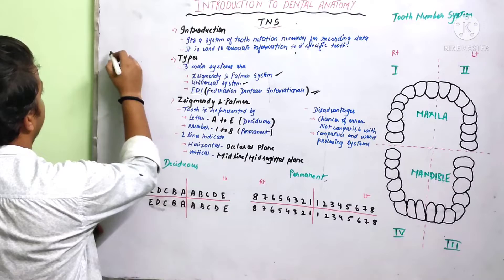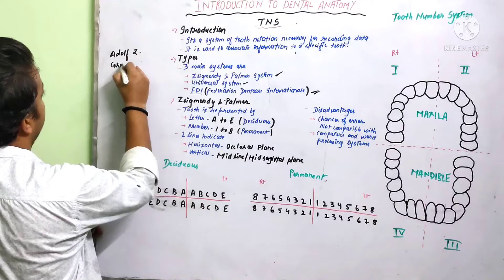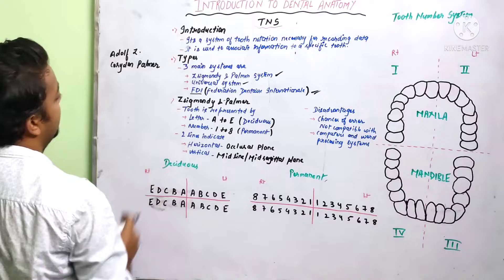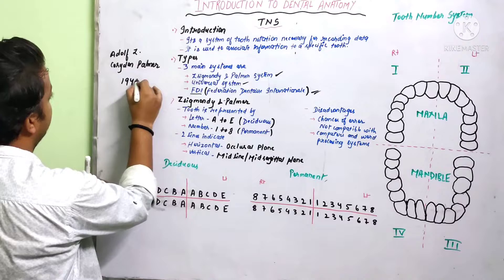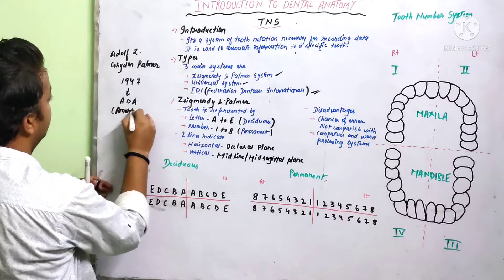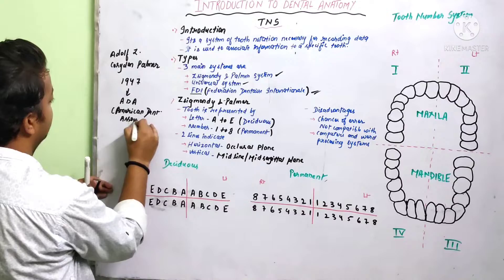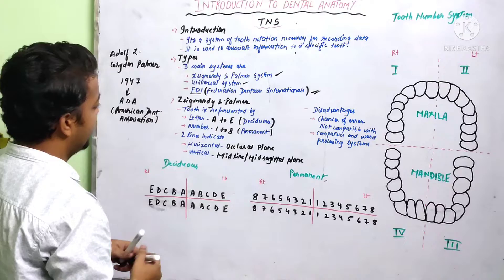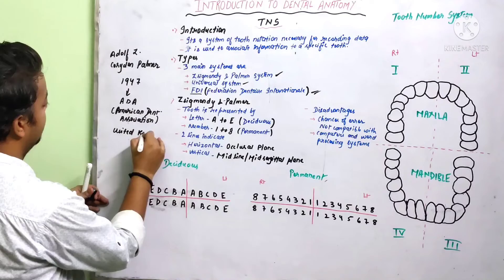Today I'll cover the Zsigmondy and Palmer system. Zsigmondy and Palmer were two dentists — Adolf Zsigmondy and Corydon Palmer — who introduced the tooth notation system in the 1800s. In the year 1947, the ADA, that is the American Dental Association, introduced the system again. This system is commonly used in the United Kingdom.